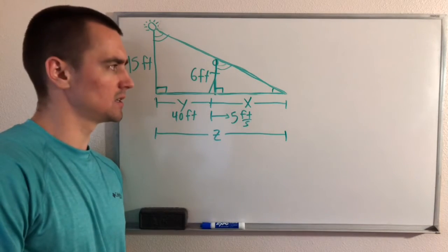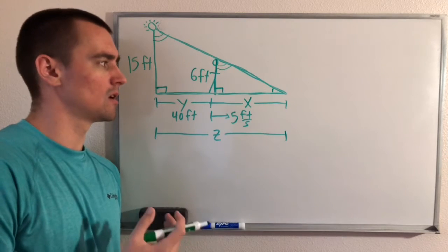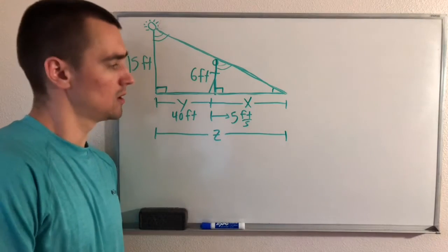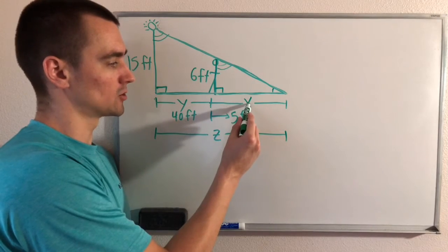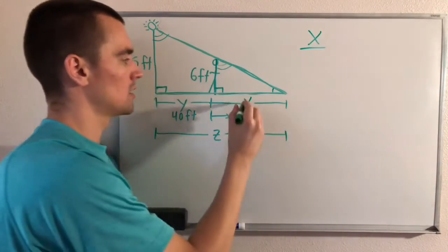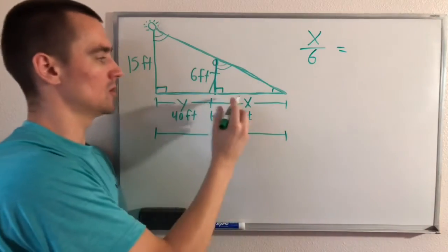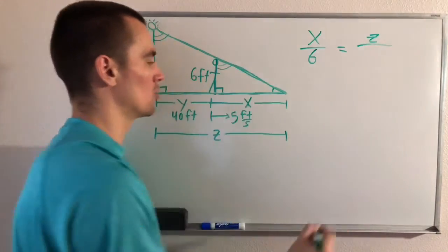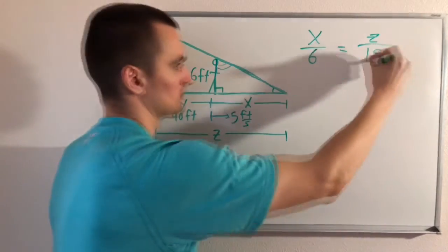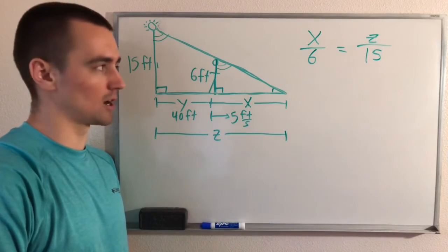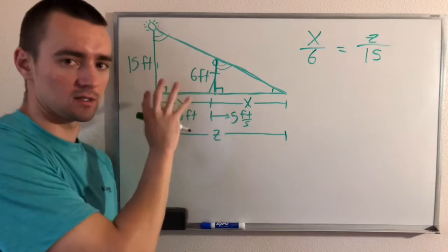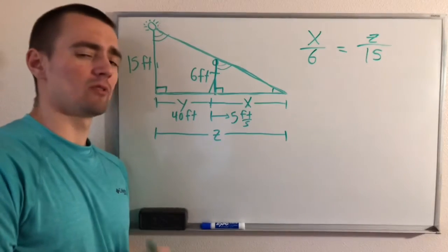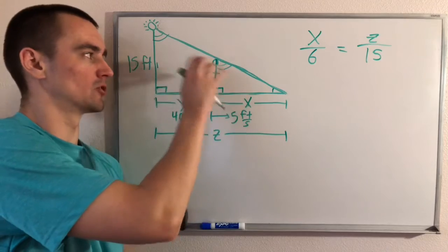Since they're similar triangles, we can create fractions from the corresponding side lengths. For example, the bottom side of the small triangle over the left side of the small triangle equals Z over the corresponding left side of the big triangle. We could do that with any two corresponding sides, including the hypotenuses, but we don't have any information about the hypotenuses.